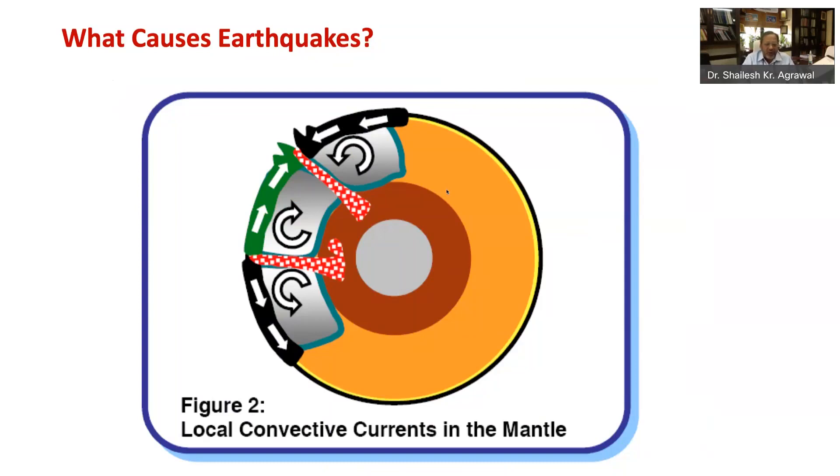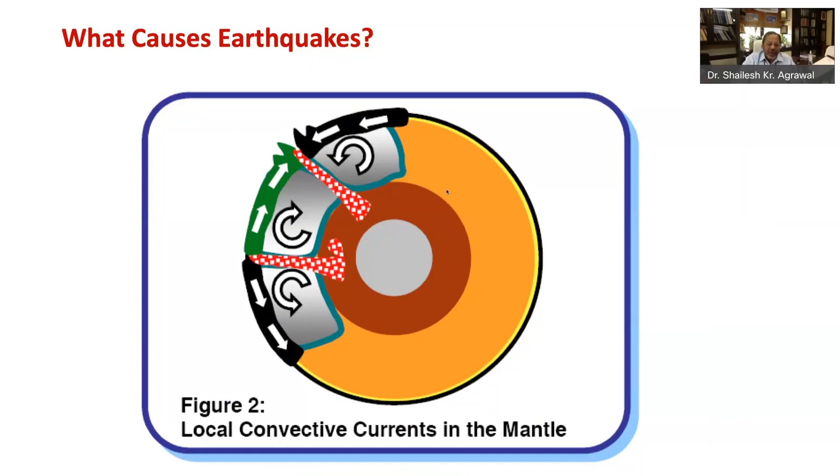Because of this convective flow of mantle material, some portion of the mantle slides on outer core. This sliding of Earth mass takes place in pieces called tectonic plates. There are seven major tectonic plates the Earth's surface is divided into, and there are smaller ones. These tectonic plates move in different directions and at different speeds from those of neighboring tectonic plates. This figure shows the seven major tectonic plates which we have.